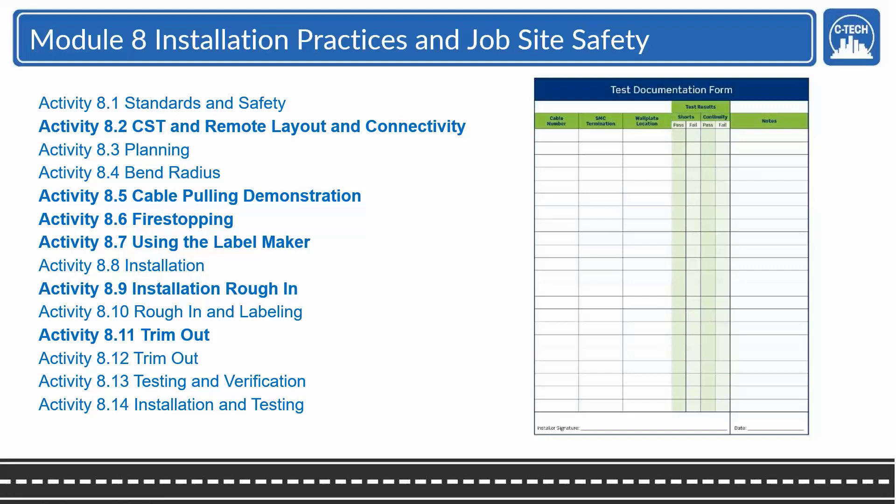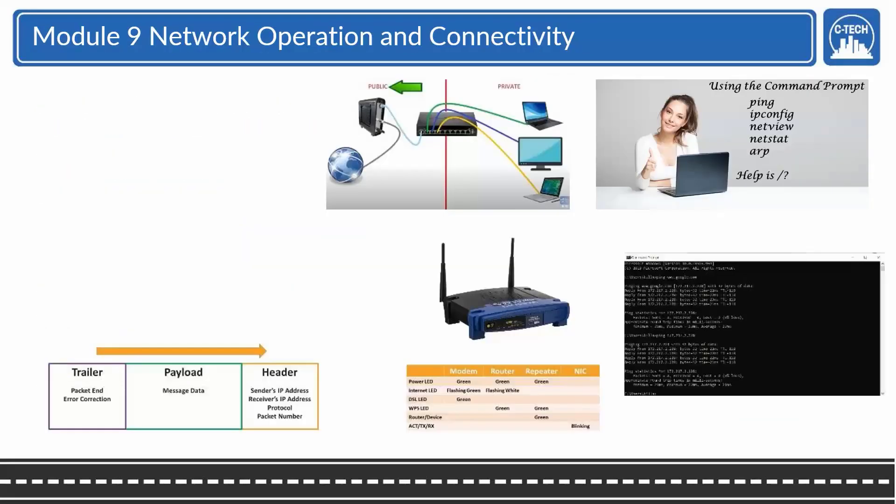Module 9 is network operation and connectivity. Essentially how the devices all communicate to send a message both internally and out over the internet. What the devices do, how the lights work, and then the basics of what a frame is, and how they're transmitted through the OSI and TCP IP models, which are essentially the same thing. It's just one has more steps than the other.